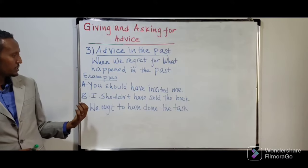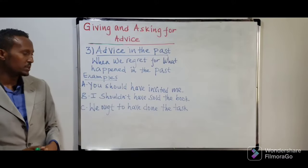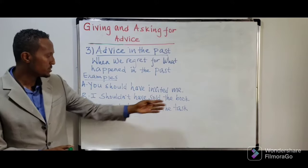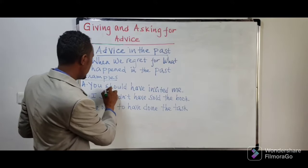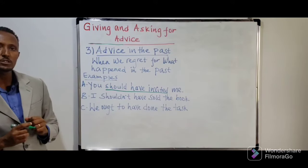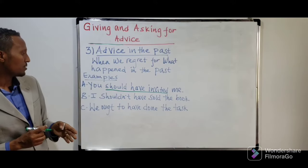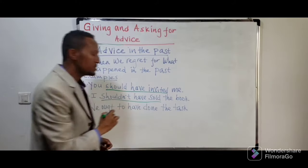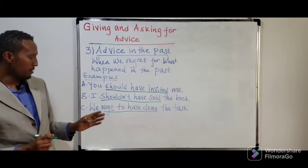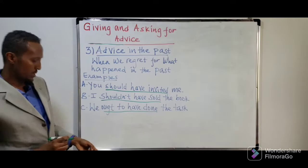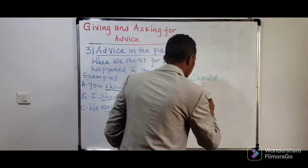Look here — these are good sentences to show how past actions should be stated when giving advice: 'You should have invited me.' 'I shouldn't have sold the book.' 'We ought to have done the task.' Let's underline the appropriate expressions used to give advice in the past: 'should have invited.' Now it has a different structure from the previous two. That is: should + have + verb3 (past participle). This is also possible in negative form — shouldn't + have + verb3. Or: ought to + have + verb3.